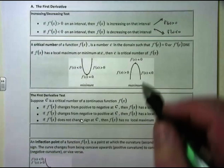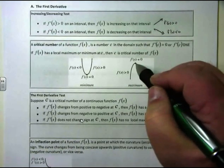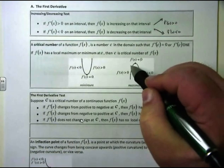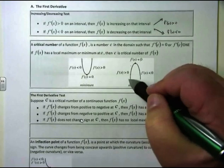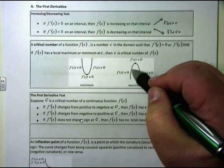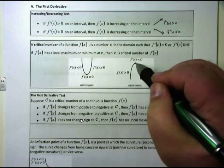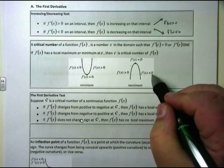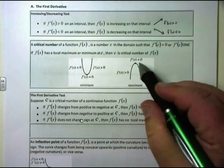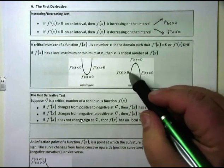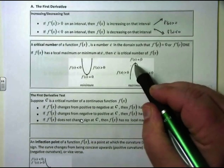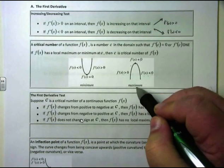Similarly, if you've got your critical number where the derivative equals 0, and just before that the derivative was positive — meaning you had to go up — you hit your critical number, and then go down where the derivative is less than 0. That gives you a maximum. So when the derivative goes from positive, hits your critical number, and then goes to negative, that makes a maximum.